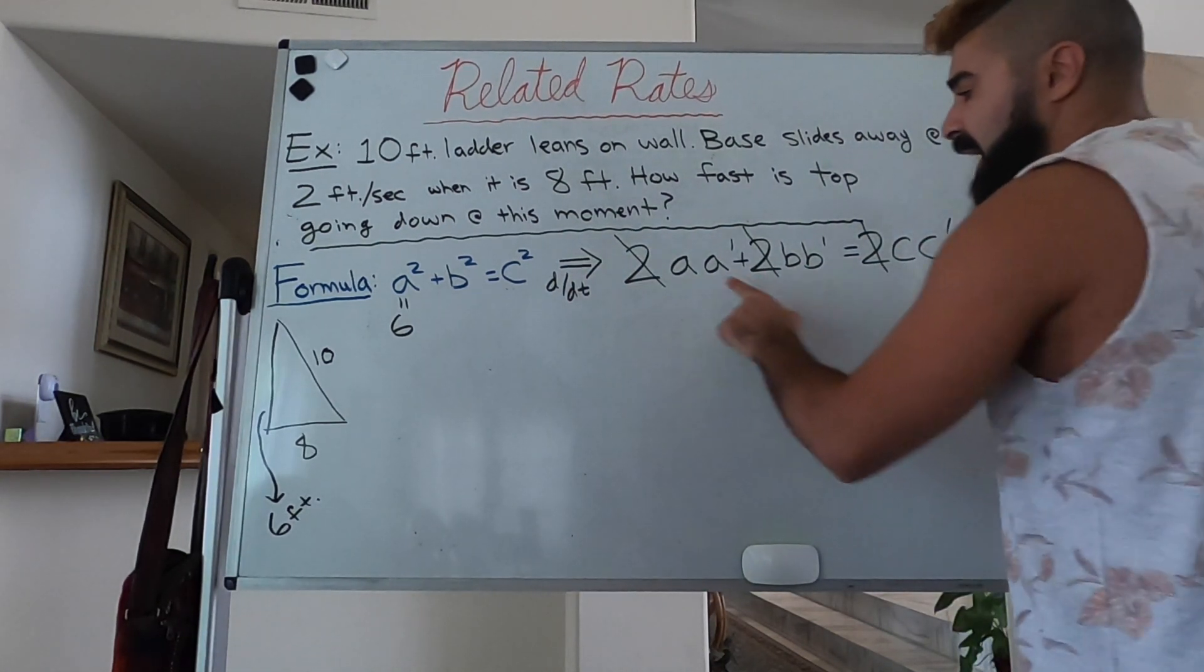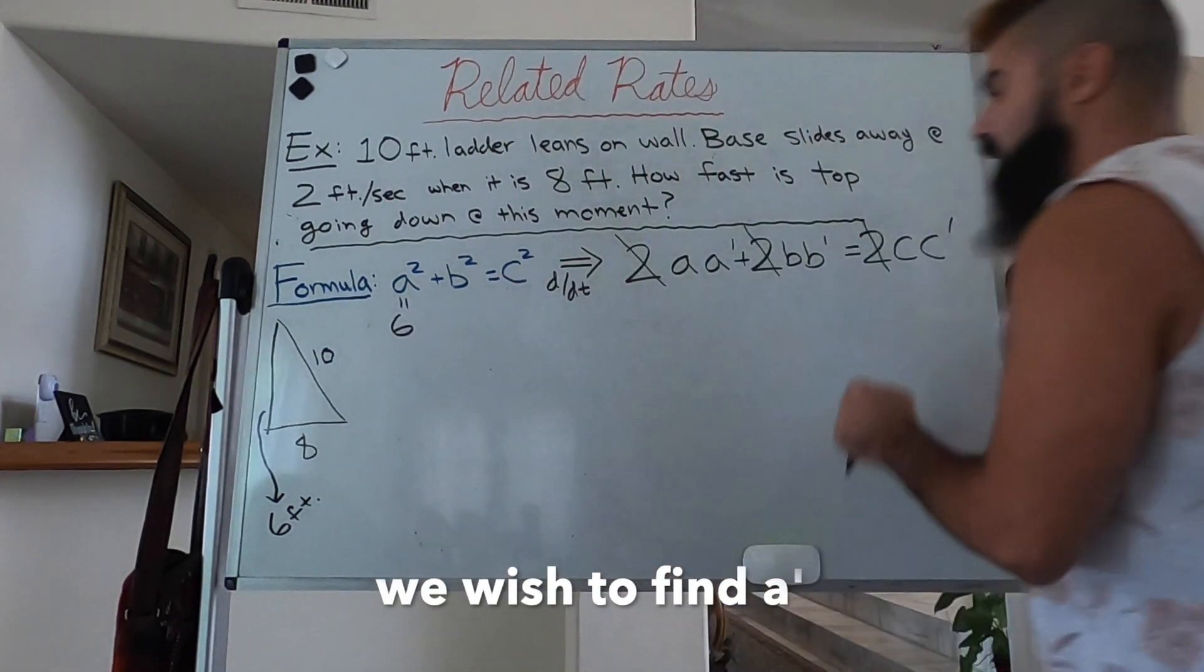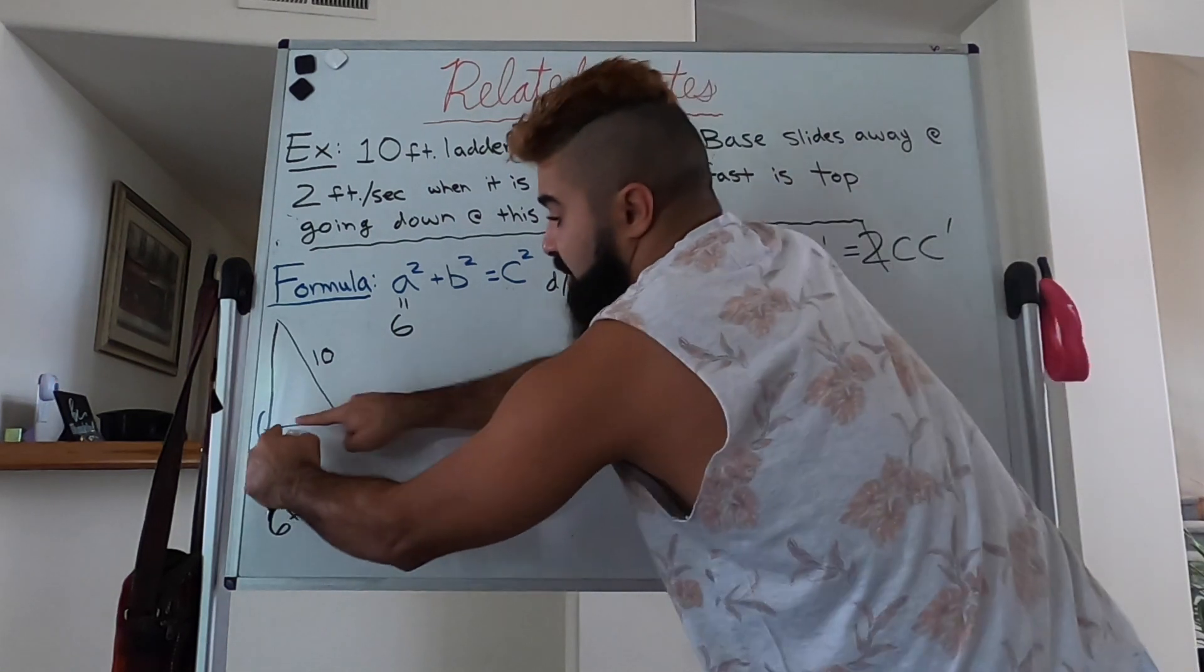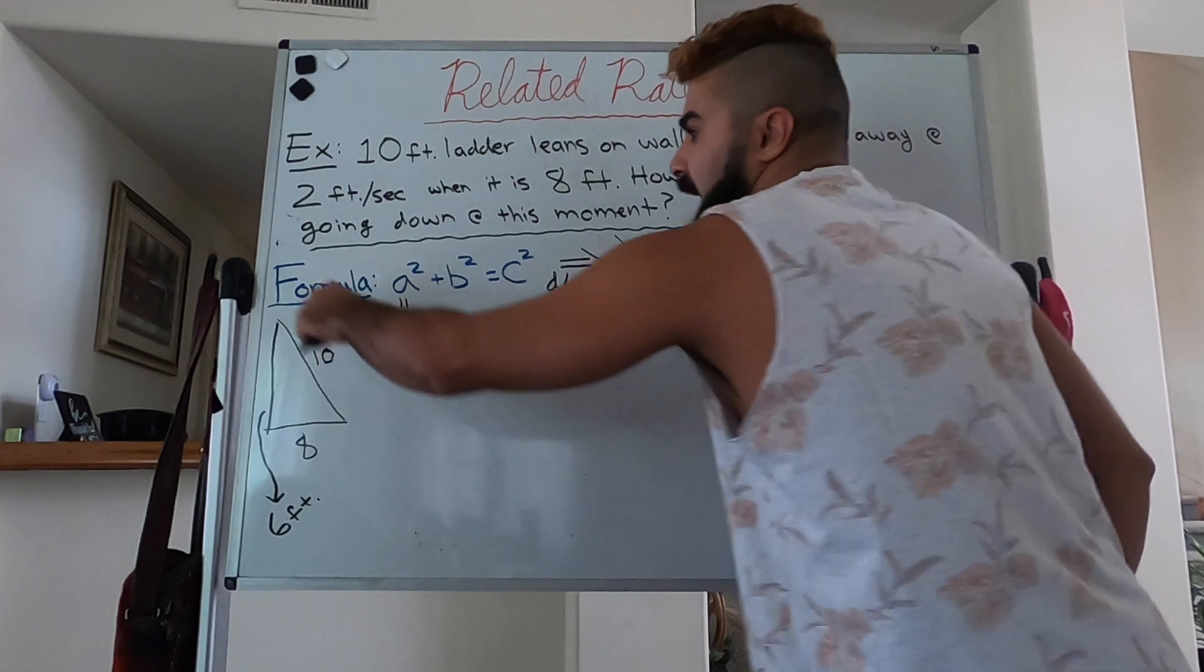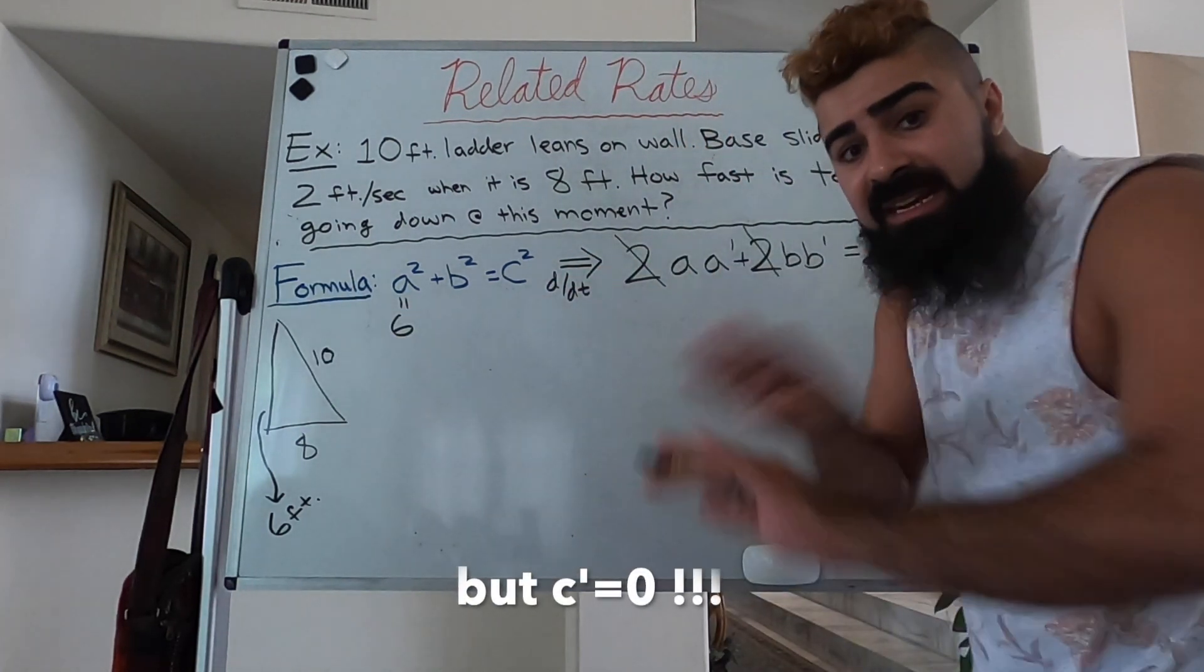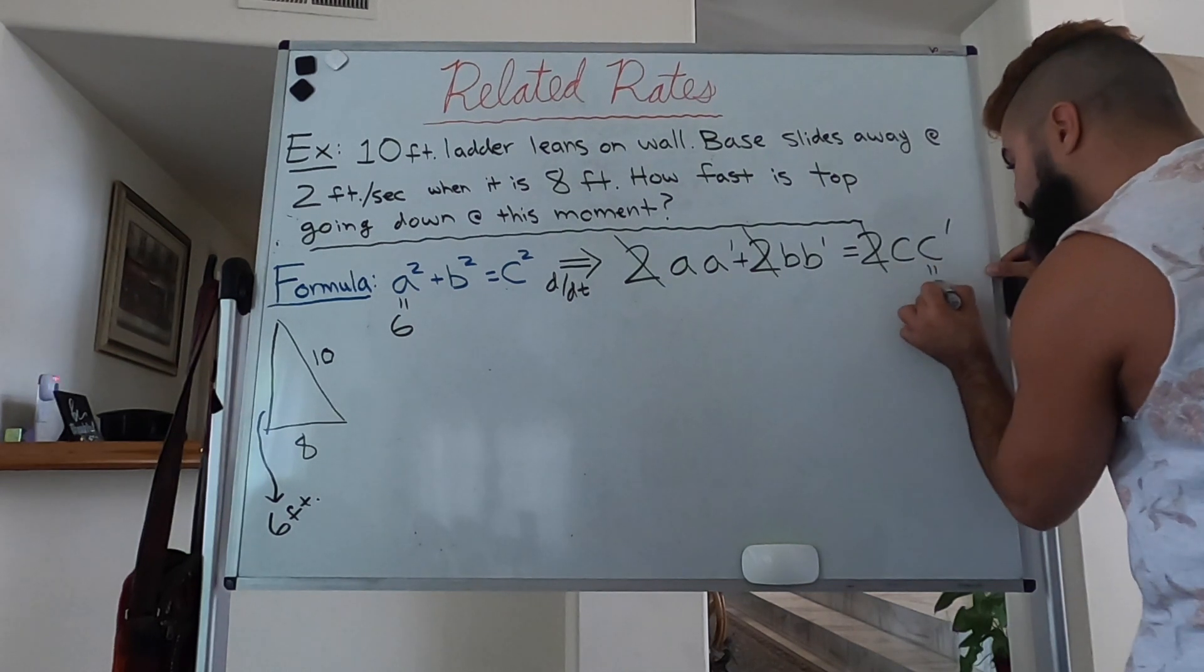And note one thing: a' is the rate at which this is going down, b' is the rate at which the base is extending, c' is the rate at which the ladder's height changes. The ladder's height never changes, so c' is automatically going to be equal to 0.